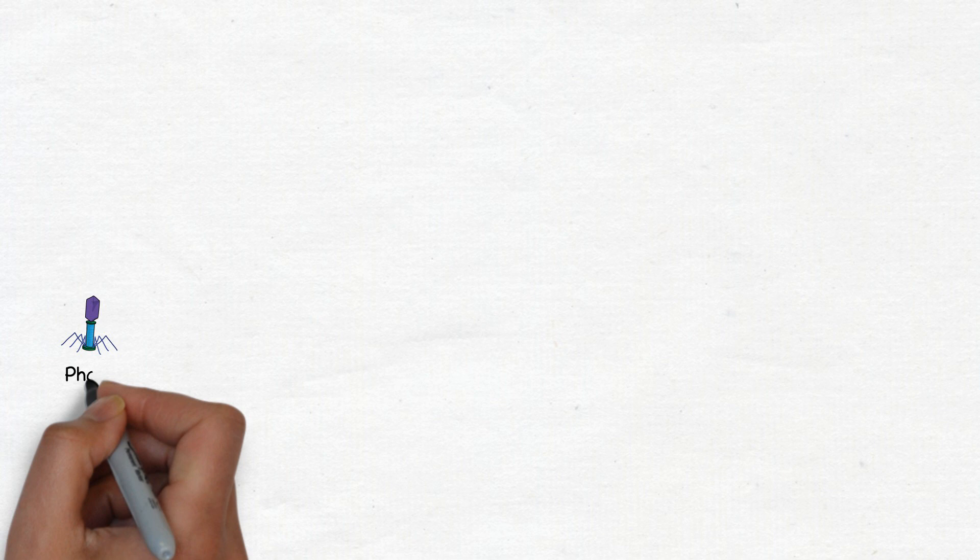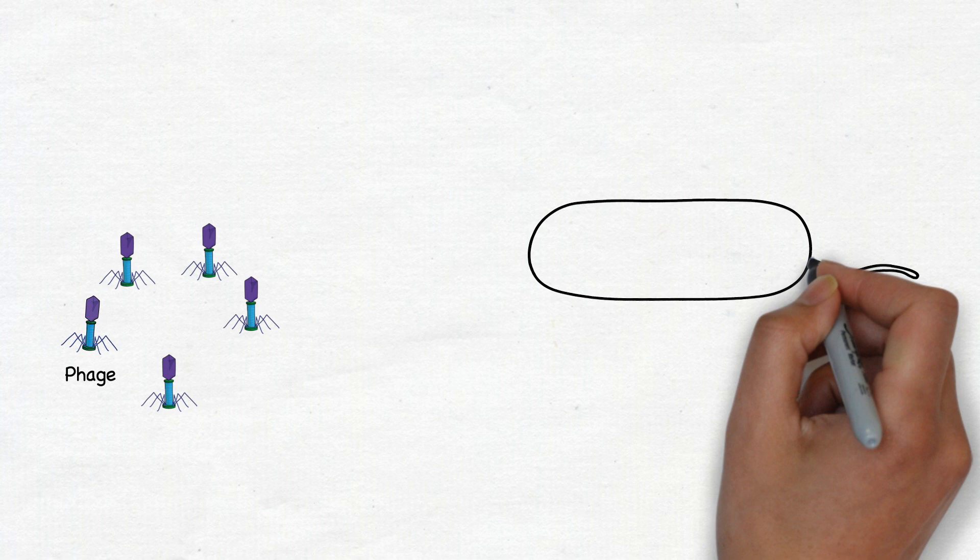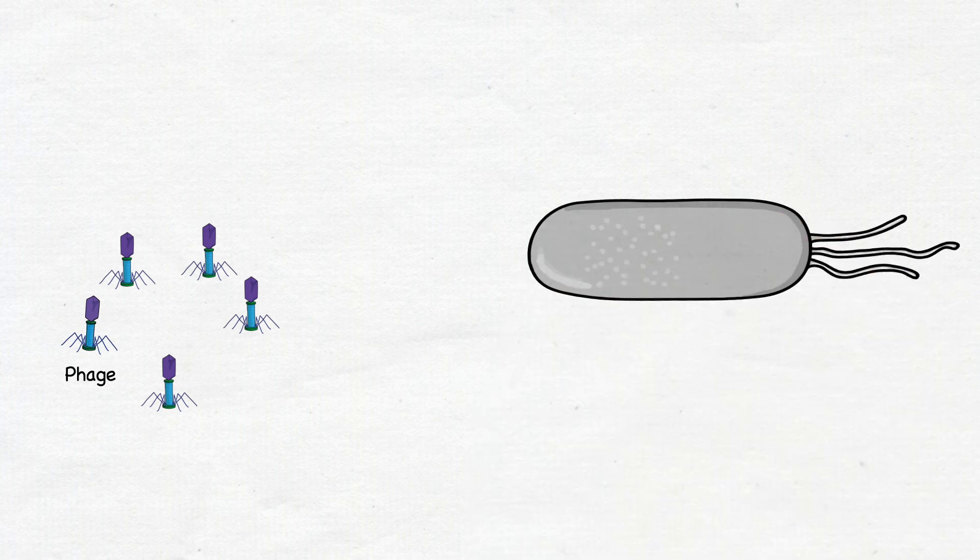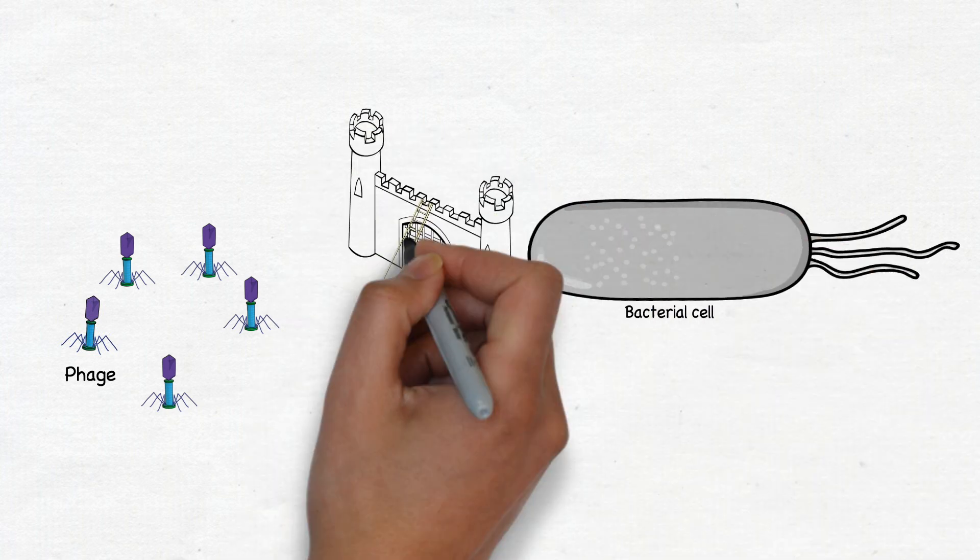To identify an off switch for Cas9, we look to the viruses that kill bacteria, which are known as phages. Since phages are in constant battle with bacteria, they frequently evolve ways to outwit bacterial defense systems.